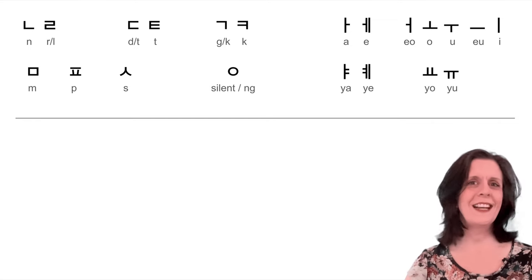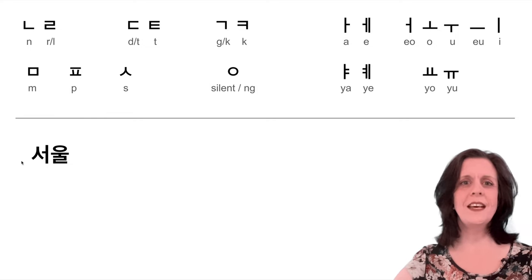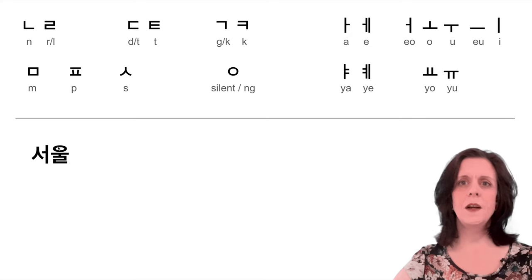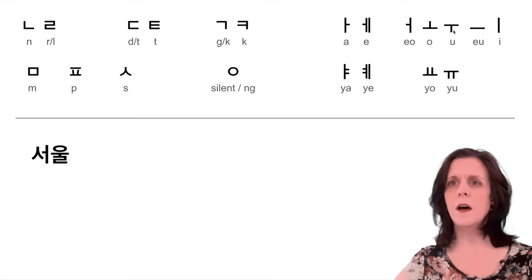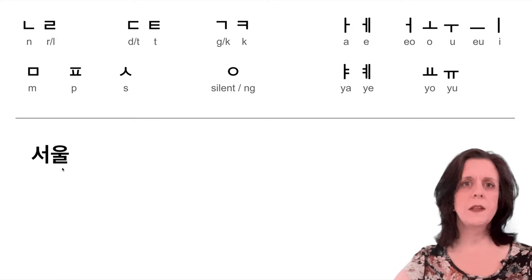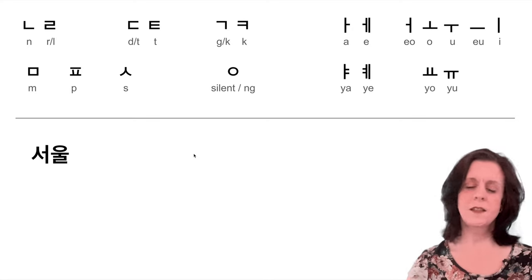Right, on to some place names. We've got an S and an O, a silent holder for the U, and we end with an L character. So there's Seoul. It is Seoul.